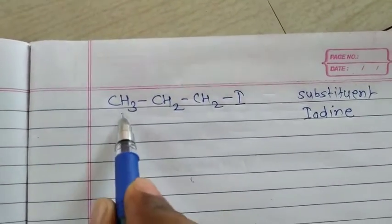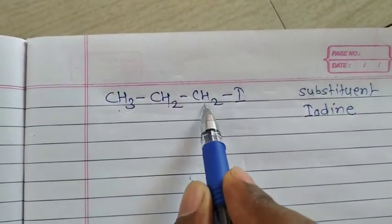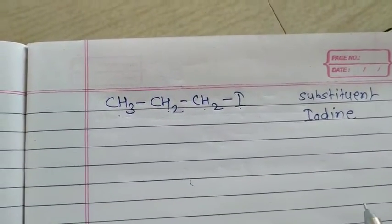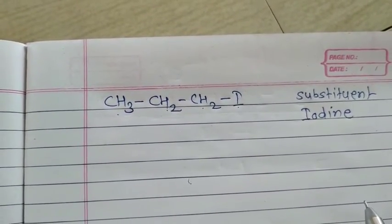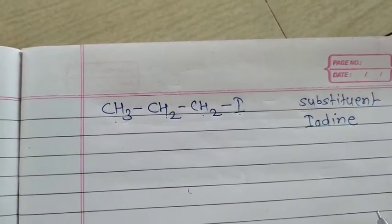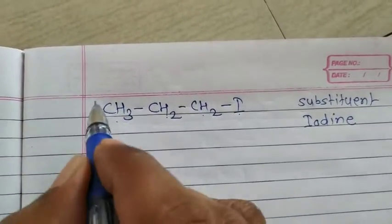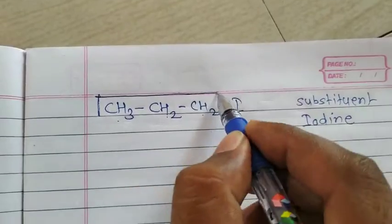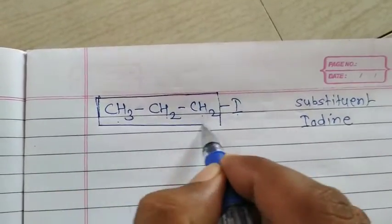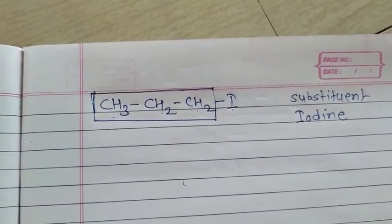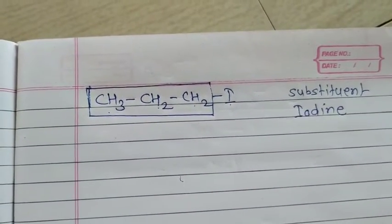In this example, CH3, CH2, CH2, and I are bonded in a straight chain. In the IUPAC naming system, the first step is to select the longest continuous chain of carbon atoms. Here we are selecting that longest continuous chain. The important thing is that the halogen itself is not selected.